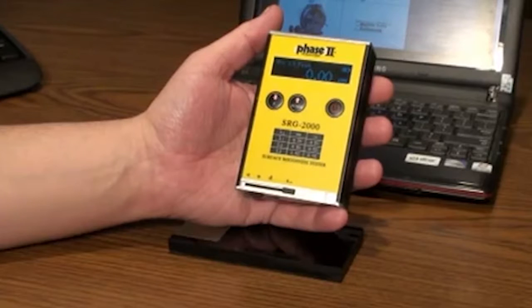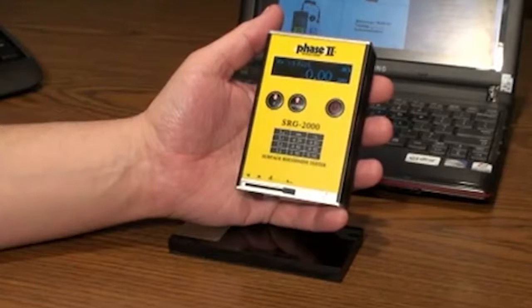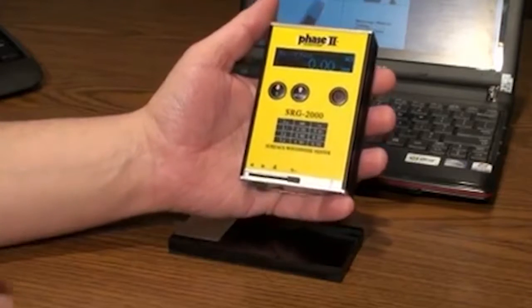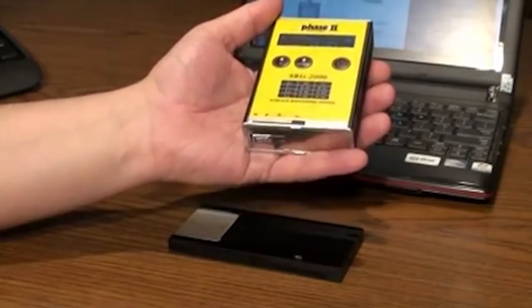As you can see, the SRG2000 is a handheld battery-powered instrument with graphic display and controls in the front, a built-in stylus moving forward and then returning upon taking surface roughness samples automatically.